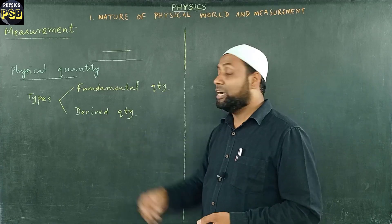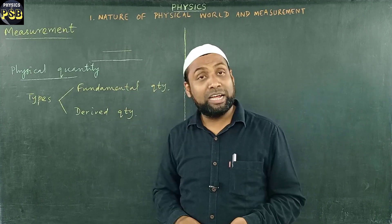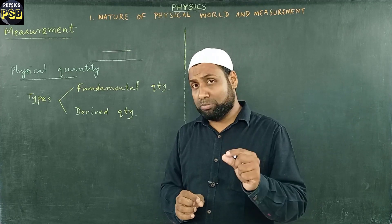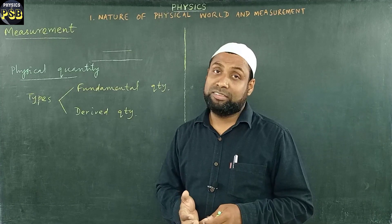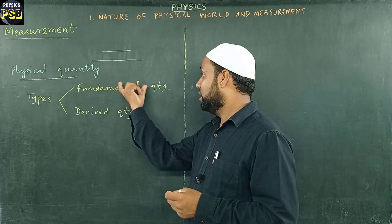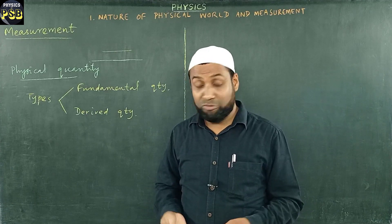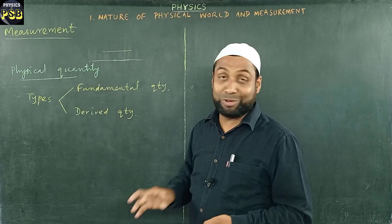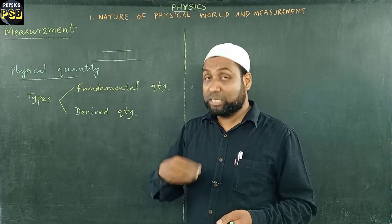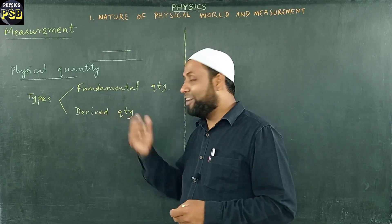Next we have derived quantity. Quantities that can be measured in terms of fundamental quantities are known as derived quantities. For example, area — if you multiply the length of an object by its breadth, you get area. Length is a fundamental quantity measured in meters, and from that we get area. We also have force, energy, and weight as examples of derived quantities. In simple words, quantities that can be expressed in terms of fundamental quantities are called derived quantities.